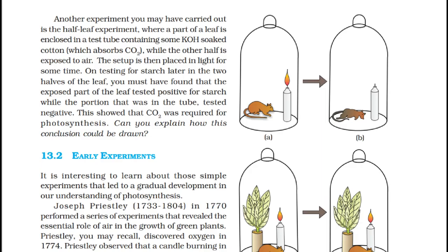Another experiment is the half-leaf experiment where a part of a leaf is enclosed in a test tube containing KOH-soaked cotton which absorbs CO2, while the other half is exposed to air. On testing for starch in the two halves, the exposed part tested positive while the portion in the tube tested negative. This showed that CO2 was required for photosynthesis.